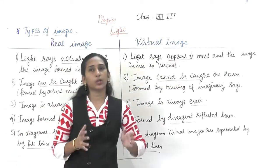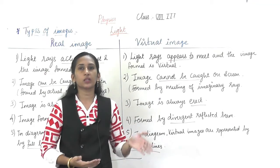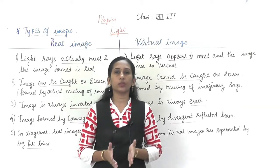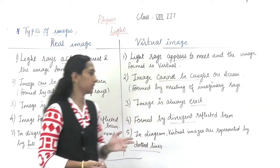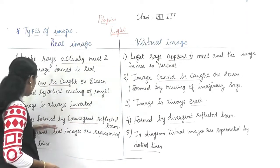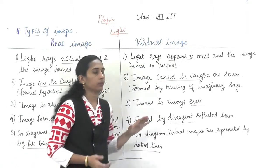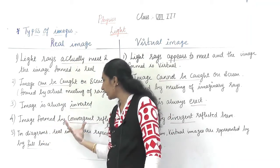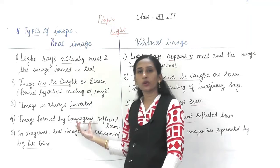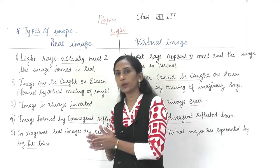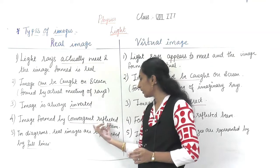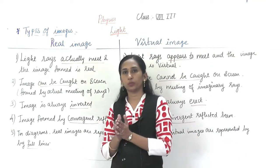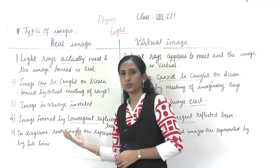We will study in detail how images are formed, how erect images are produced, and how inverted images are obtained. The fourth difference: a real image is formed by a convergent reflected beam — convergent means all the rays are collected and meet at one point, and the image is formed there.